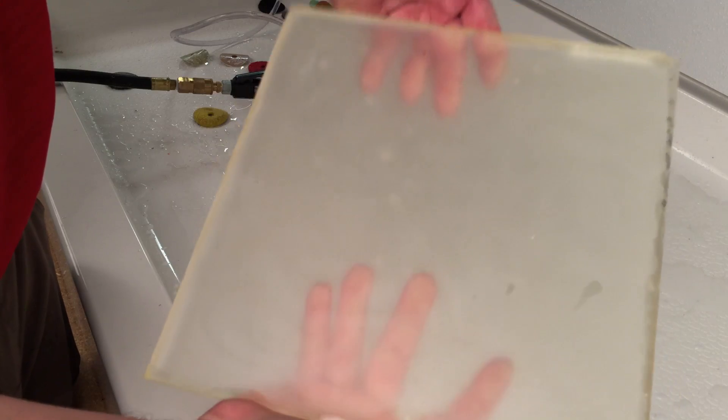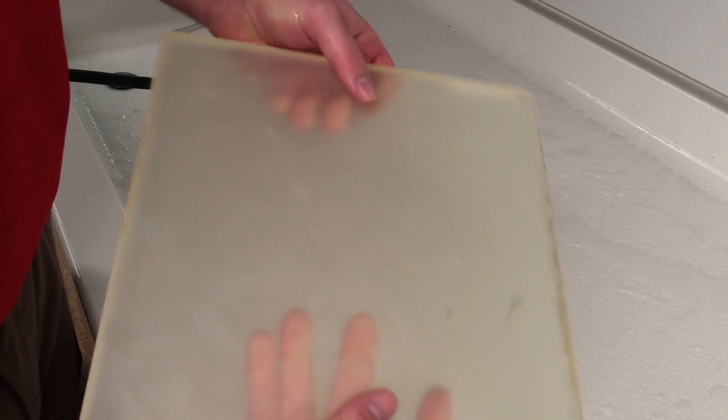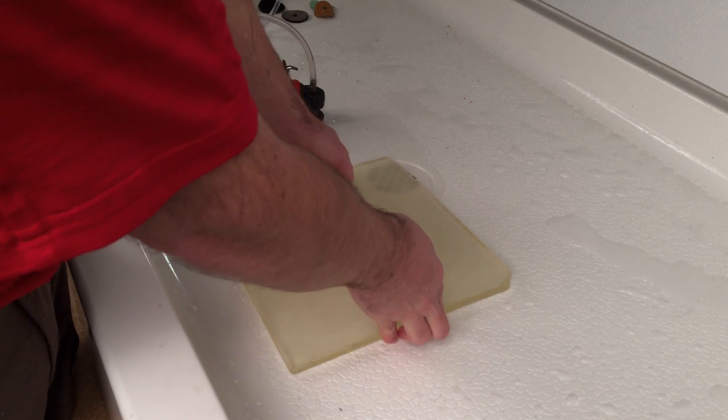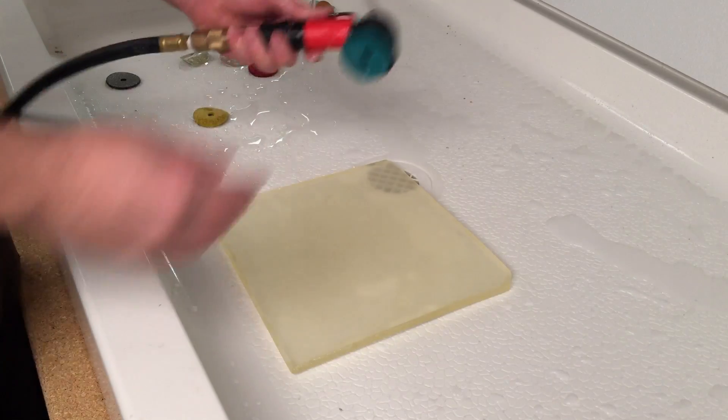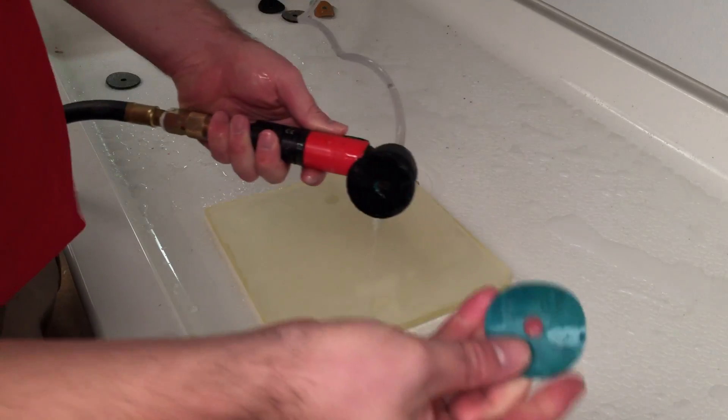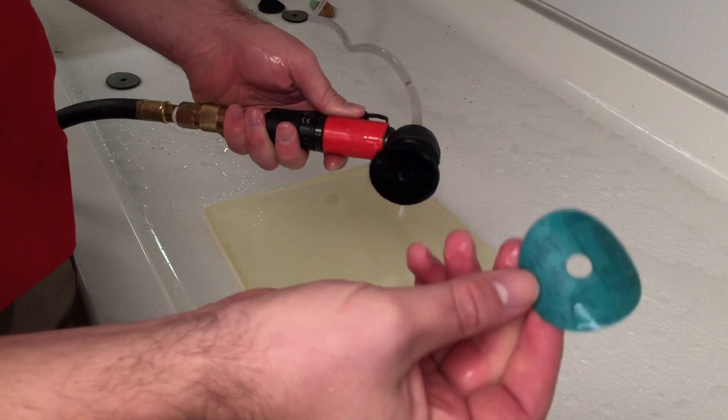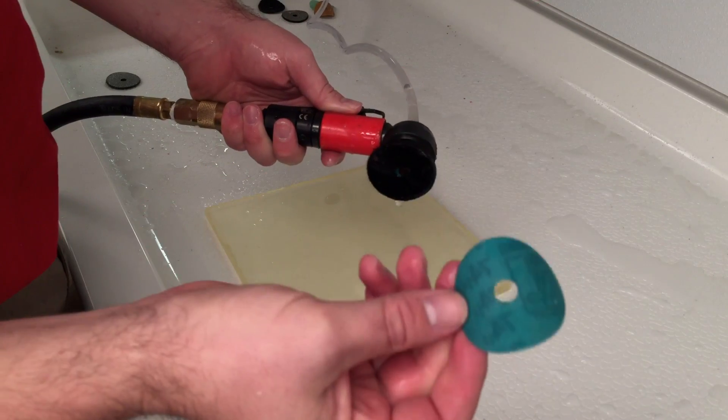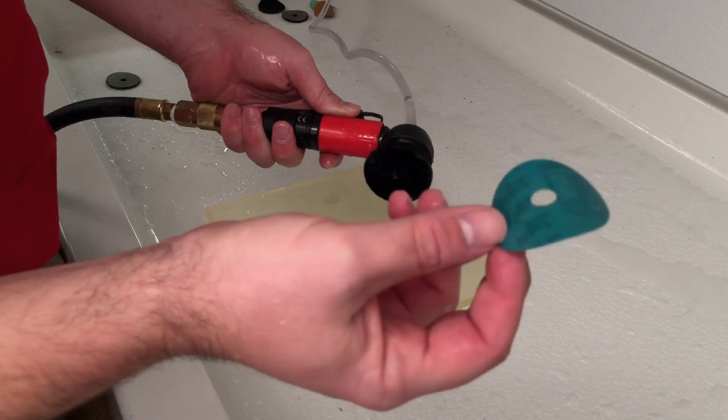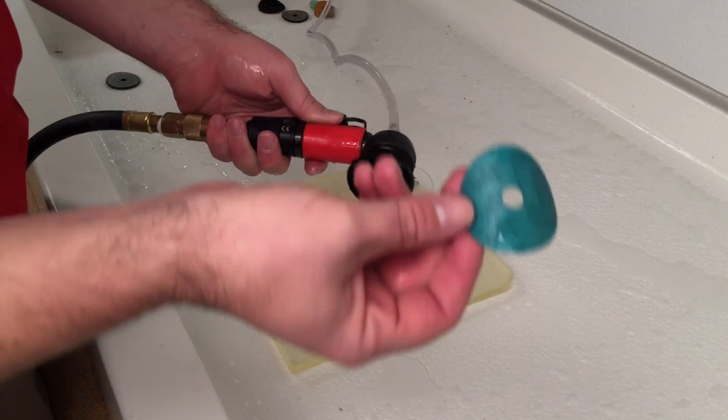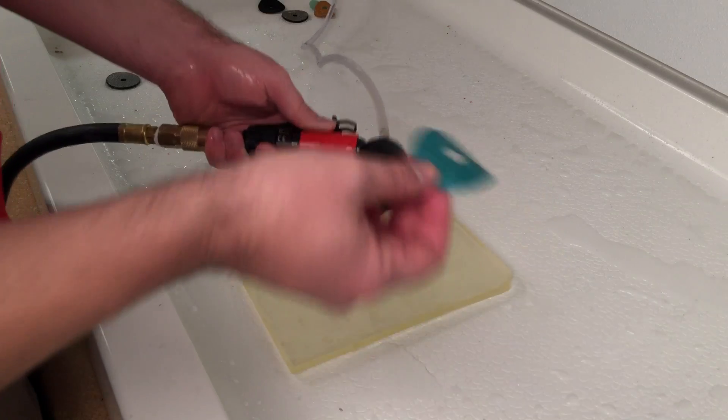Our 200 grit electrostatic cleans up pretty quickly. Now, the electrostatic discs are going to be a much finer product. They are a paperback product where the discs are electrostatically charged with diamonds. So, they are going to wear out a little bit faster. You're going to wear through these a little bit quicker, but they give you a great surface on the glass. They're also terribly inexpensive. So, you can afford to buy several of these in the terms of the electroplated discs. So, we're going to move from our 200 now to a 300 grit electrostatic.